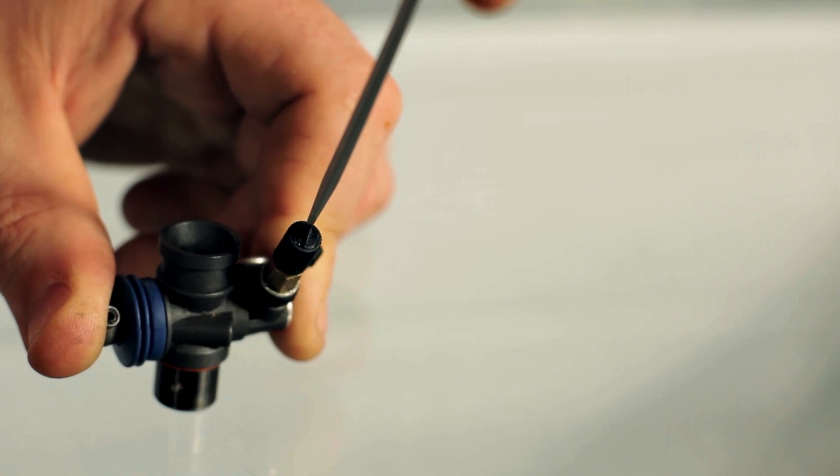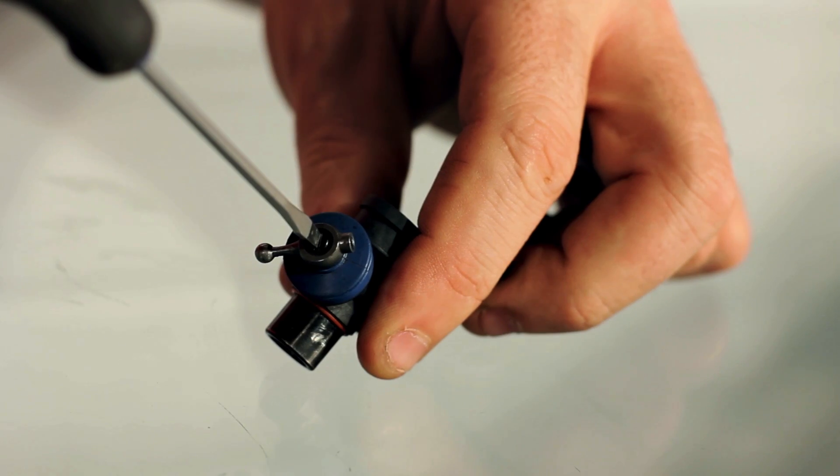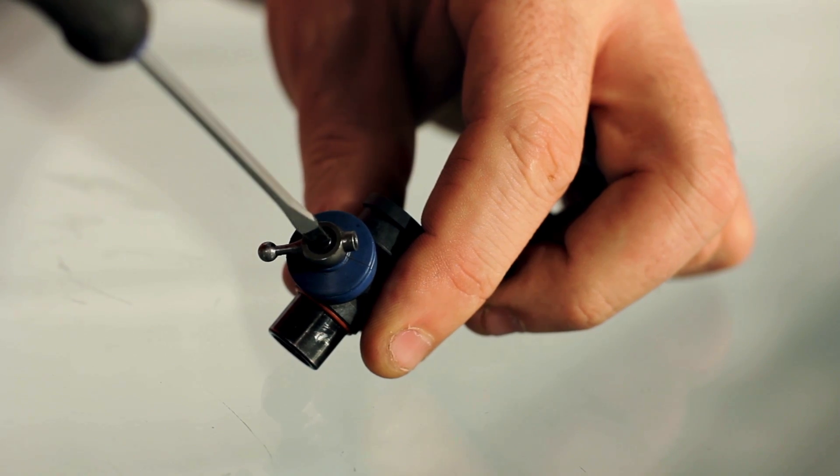First thing you want to do is adjust your high-speed and low-speed needle valves on the carburetor back to the stock settings. We'll use that as the starting point. From there, we want to start on the high-speed needle jet.